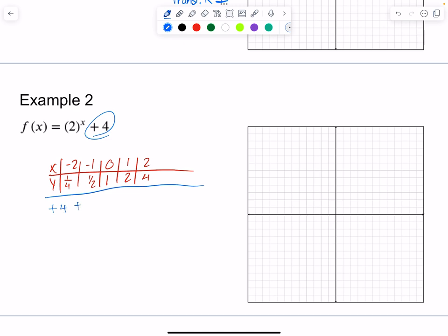So I'm just adding 4 to all of these values. So it's 4 and 1 4th. It's 4 and 1 half. It's 5. It's 6. It's 8. So this is where we shifted our asymptote. Instead of at 0, we shifted our asymptote. And then everything else about my function stayed the same. All of the values that I had before just shifted up 4.